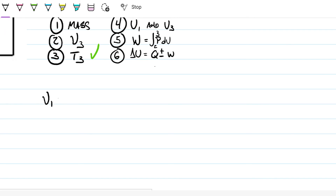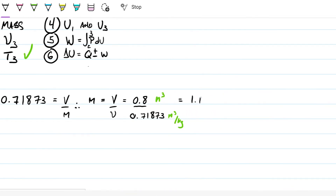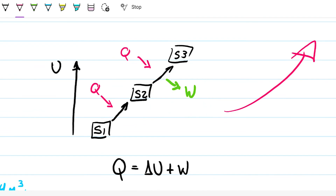With the specific volume at State 1 equal to 0.71873 m³/kg, and knowing that specific volume equals volume divided by mass, the mass is 0.8 divided by 0.71873, which gives 1.113 kilograms. That completes step one. If this was helpful, consider liking the video, and if you have any questions leave them in the comments below and we'll talk soon.